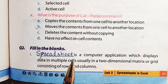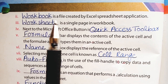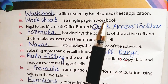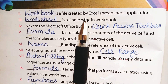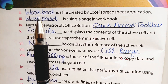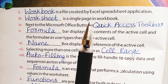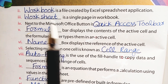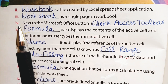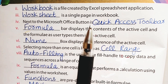Part number 2: Dash is a file created by the Excel spreadsheet application. In MS Excel, the file that is created is called a workbook — the answer is workbook. Part number 3: Dash is a single page in a workbook. A single page in a workbook is called a worksheet — the answer is worksheet.